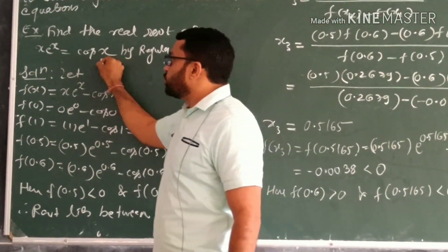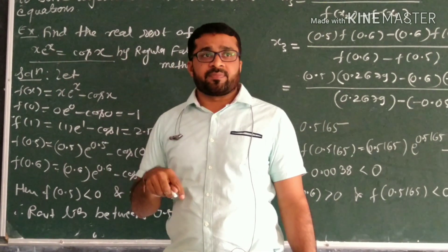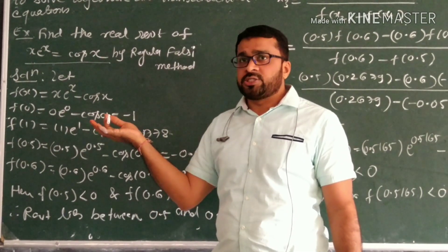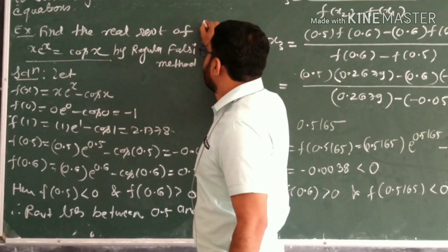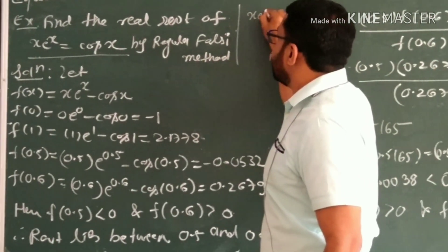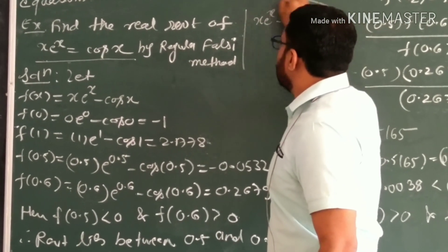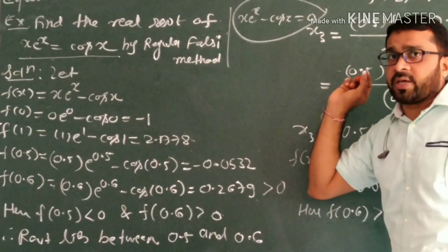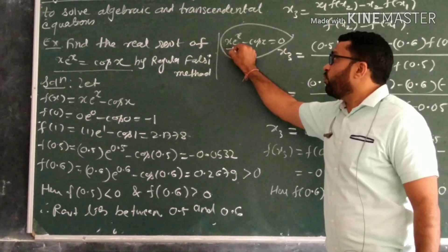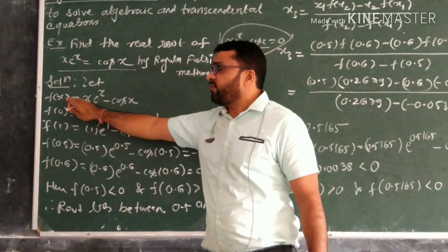So first you have to write the equation in standard form. The standard form should be zero. So the equation will be: xe^x - cos(x) = 0. This equation we will now solve, and the LHS part we consider as f(x).